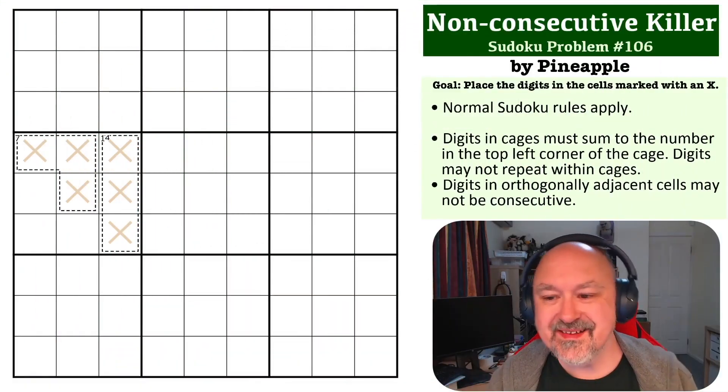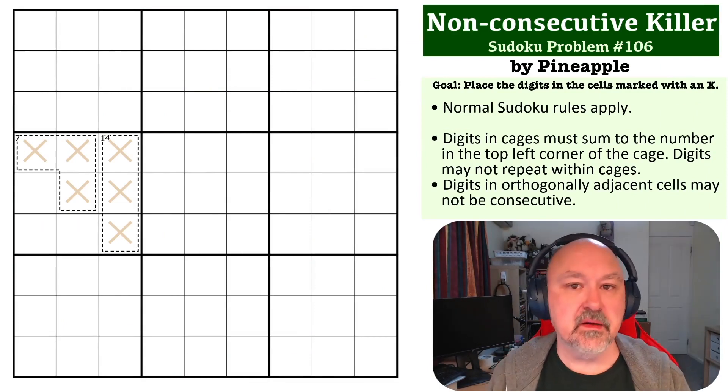Hey everyone, this is Bremster and this is number 106 in the Sudoku Problems series. This is a non-consecutive killer problem sent in by Pineapple.